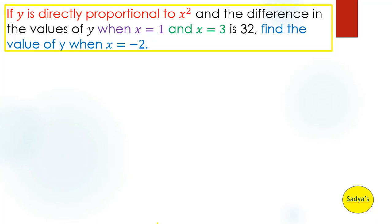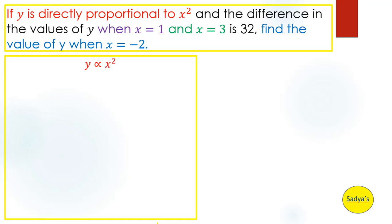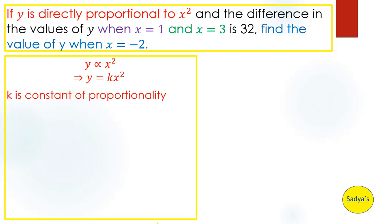Let's start with the portion written in red. If y is directly proportional to x squared, we can write this mathematically. To change proportionality into equality, we introduce a constant k. So y is directly proportional to x squared can be written as y is equal to kx squared.